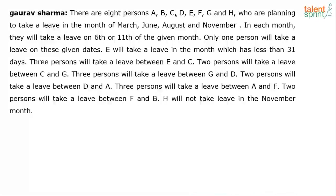There are 8 persons A, B, C, D, E, F, G, and H who are planning to take a leave in the month of March, June, August, and November. In each month, they will take a leave on the 6th or 11th of the given month. Only one person will take a leave on each of these given dates.